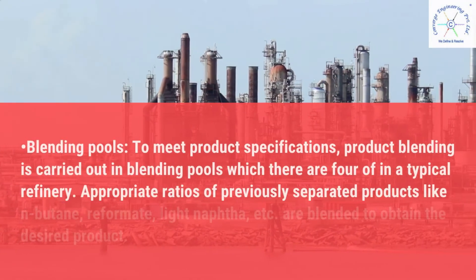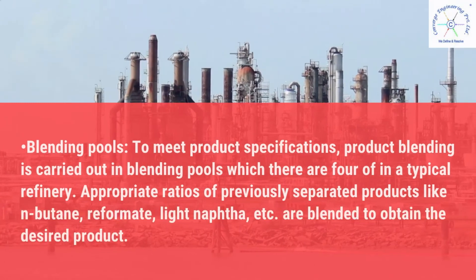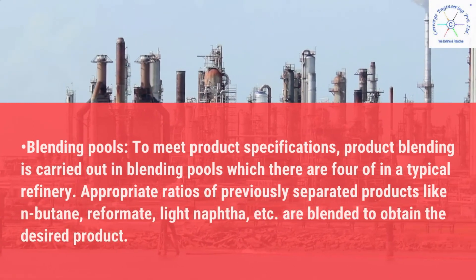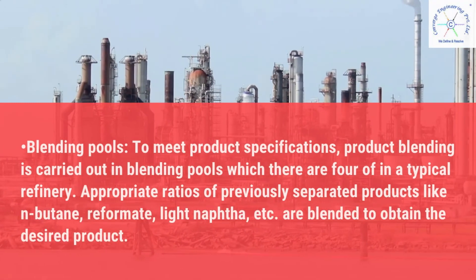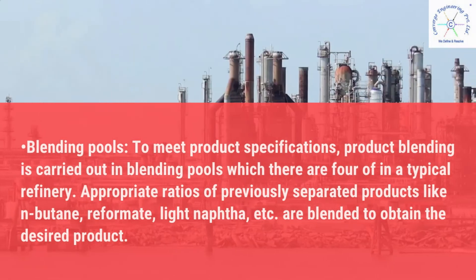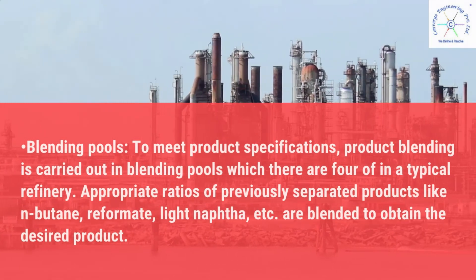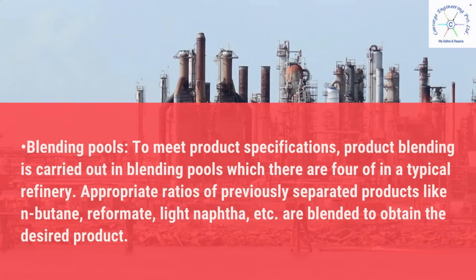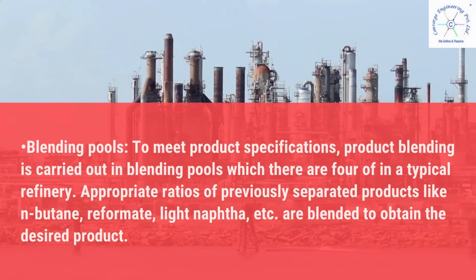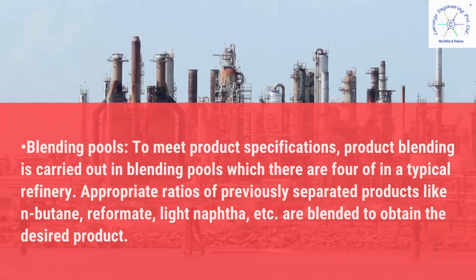Blending pools: to meet product specifications, product blending is carried out in blending pools, of which there are four in a typical refinery. Appropriate ratios of previously separated products like N-butane, reformate, light naphtha, etc. are blended to obtain the desired product.